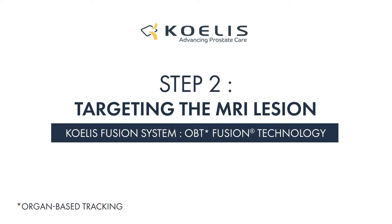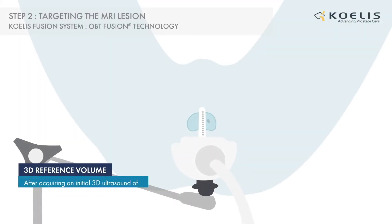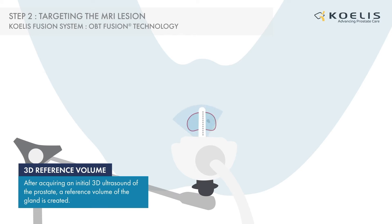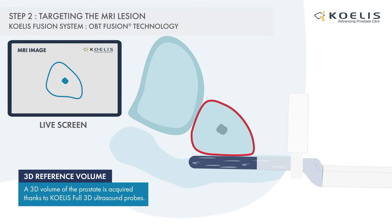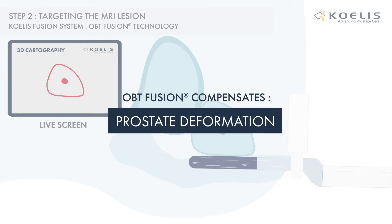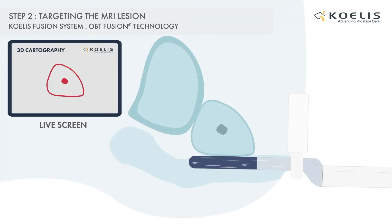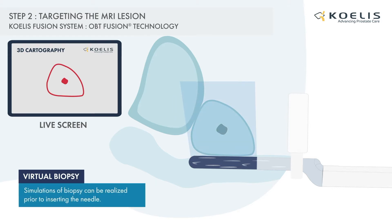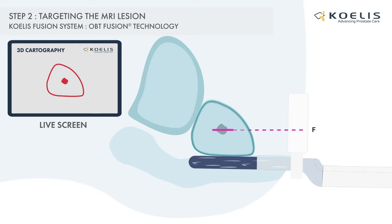Once the probe is inserted, the acquisition of prostate samples can begin. At the start of the examination, a reference volume will be taken and used to perform the elastic fusion. During the rest of the intervention, deformation of the organ will happen, which will be compensated by the organ-based tracking. Coalice Trinity allows you to perform virtual biopsies even before inserting a needle, to set the position of your target line and add extra precision in your procedure.